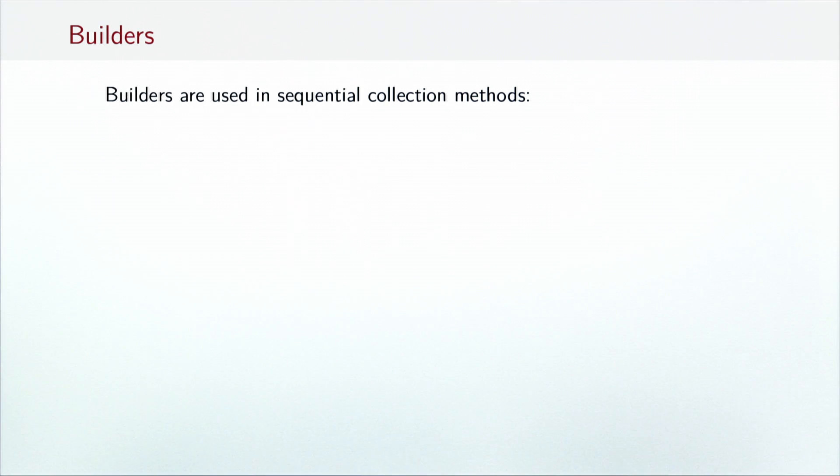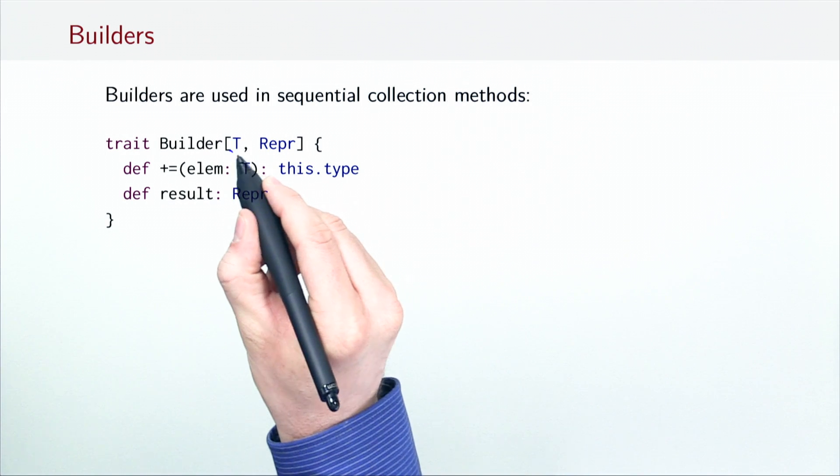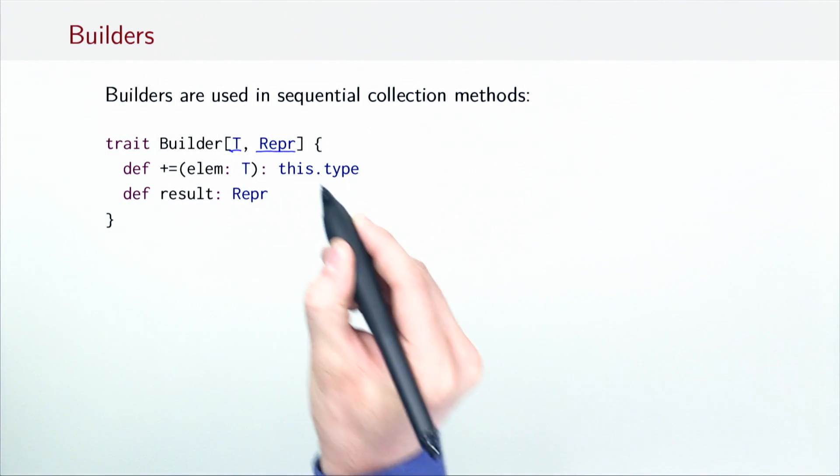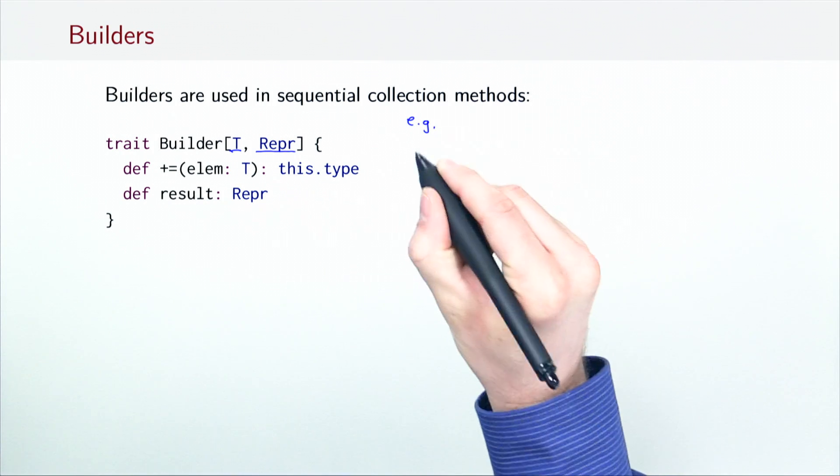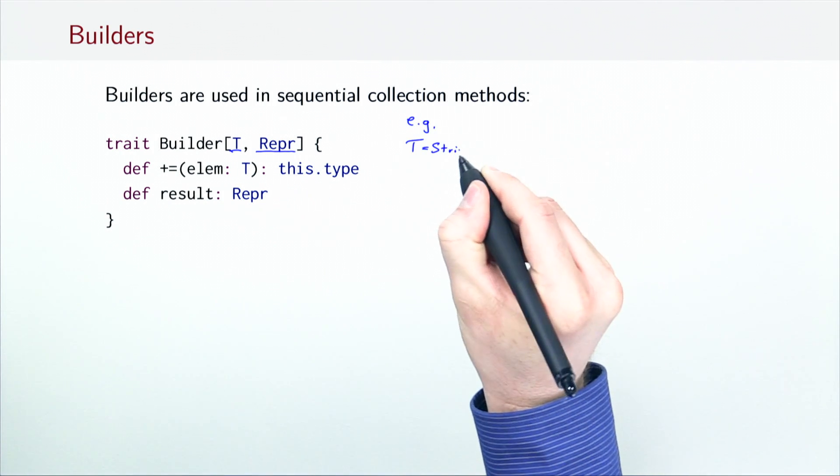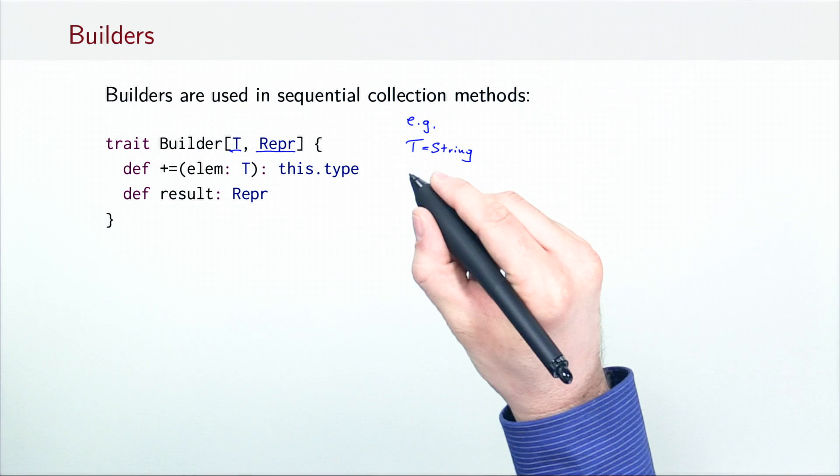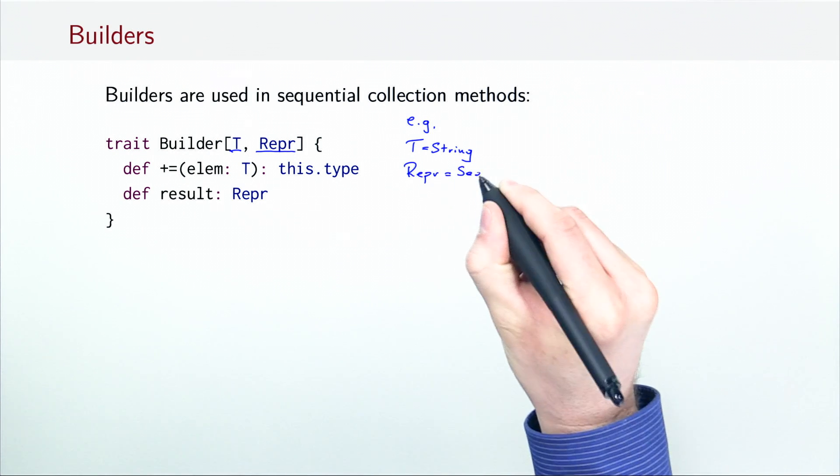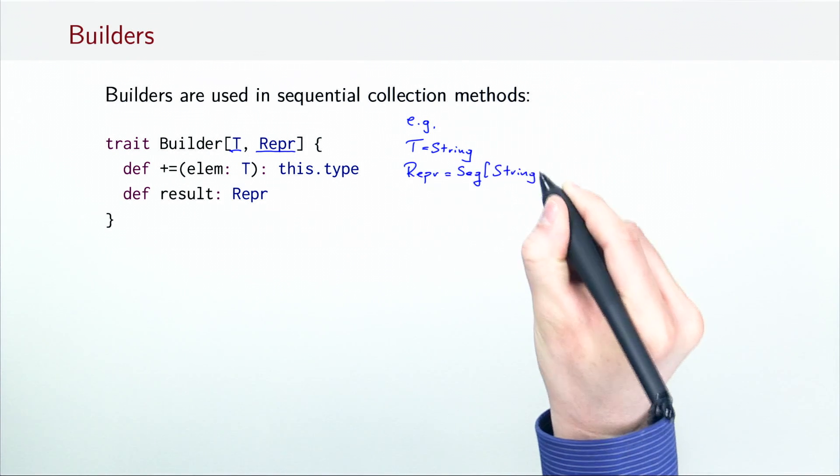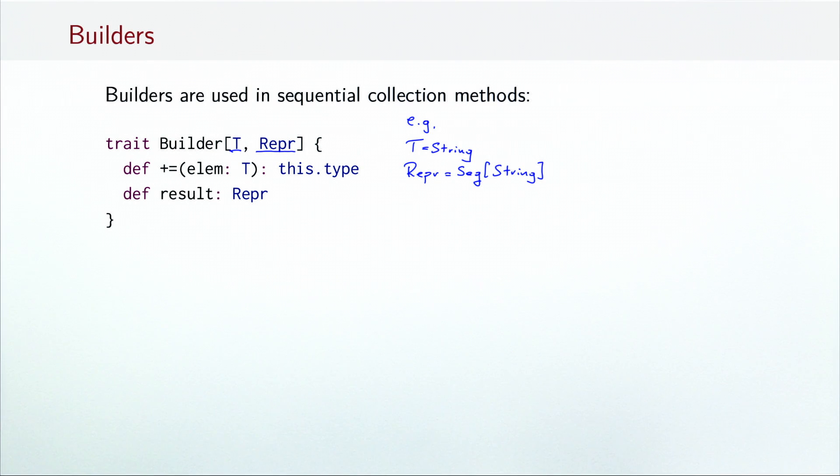We also learned that sequential transformer operations can be implemented generically using an abstraction called a builder. The builder trait in Scala takes two type parameters: T, which denotes the type of the elements of the collection, for example, string. And Repr, which denotes the type of the collection, for example, a sequence of strings.